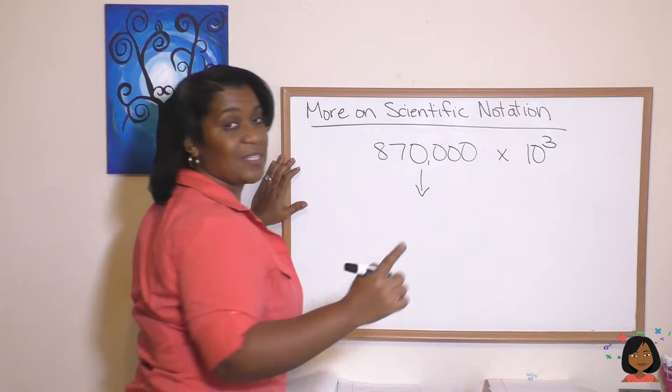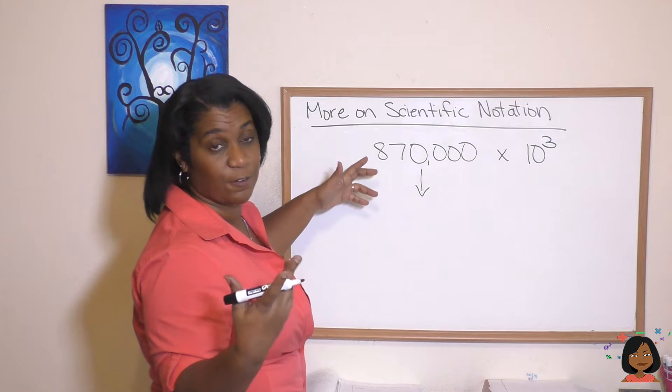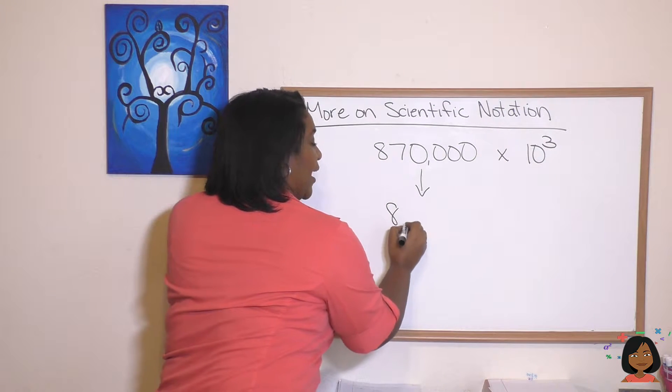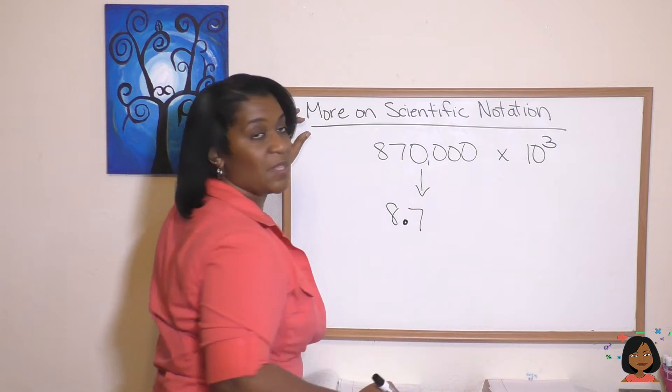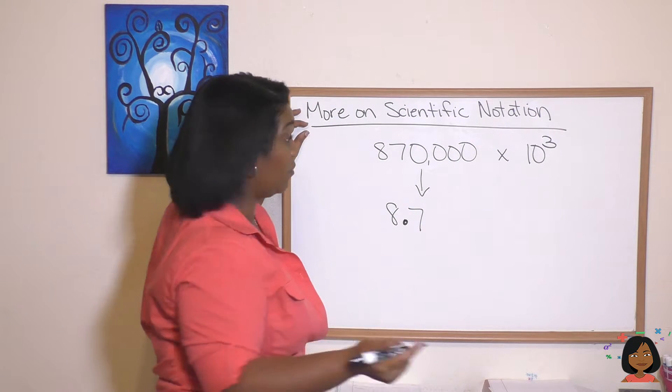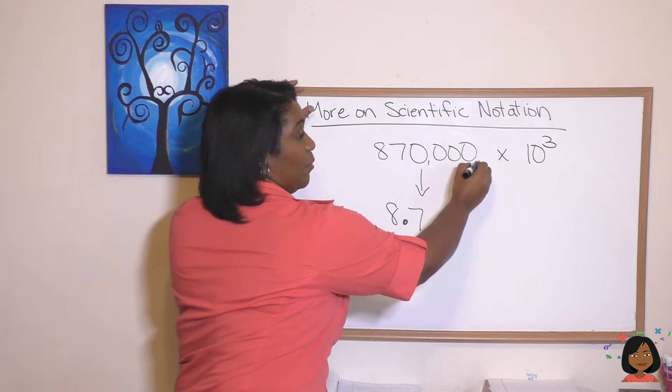How we did it is, remember, part one was to make this a decimal, find that first whole number, put the decimal right after it. So we know we're gonna have 8.7 and figure out how many decimal places you're gonna need to move your decimal, which is currently right here to get to here. Here we go: one, two, three, four, five.